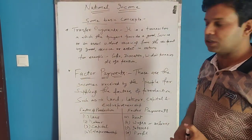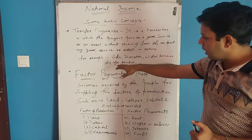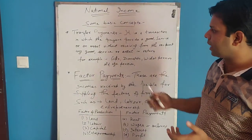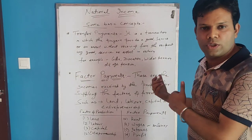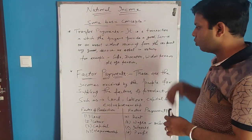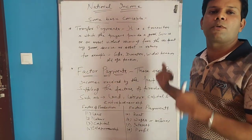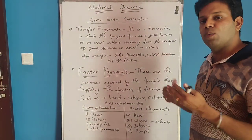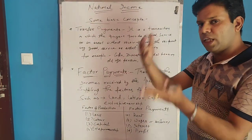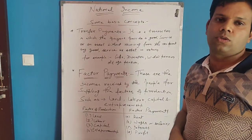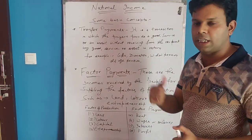Examples are: gifts, donation, widow pension, and old age pension. A gift — saaf kisi ko de raha hai toh uski against kuch ummid nahi raha. Isi tarah se donation de raha hai toh wahan se bhi aap kuch waapis lene ki ummid nahi rakhte. Isi tarah se government widow pension de raha hai toh uski against kuch ummid nahi. Old age pension bhi — uss person ko pension mil raha hai, usse kuch services ki ummid nahi rakhte.